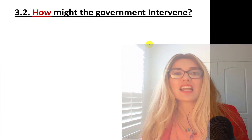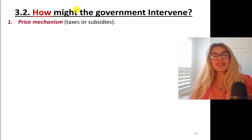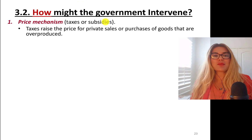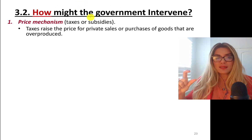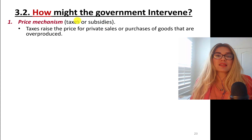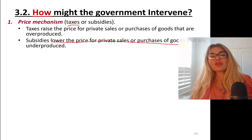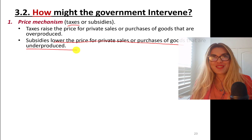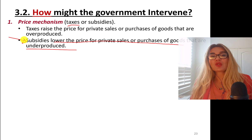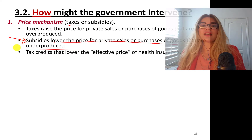Question number two: how might the government intervene? One way is the price mechanism — taxes and subsidies. Taxes raise the price of a product for private sales or purchases of goods that are overproduced, so government taxes products it thinks are overproduced and to generate revenue. Subsidies lower the price for private sales or purchases of goods that are underproduced. For instance, government has been subsidizing solar power or energy-efficient appliances.